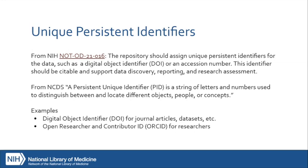Unique persistent identifiers and DOIs may be new concepts to researchers — words they've heard before but didn't fully understand. What this section of the data management and sharing plan is actually asking for is: what are the persistent unique identifiers that will be assigned to the data? It does have to be something persistent, meaning the data has to be findable and identifiable persistently into the future, as we'll see with the next question about associated timelines.